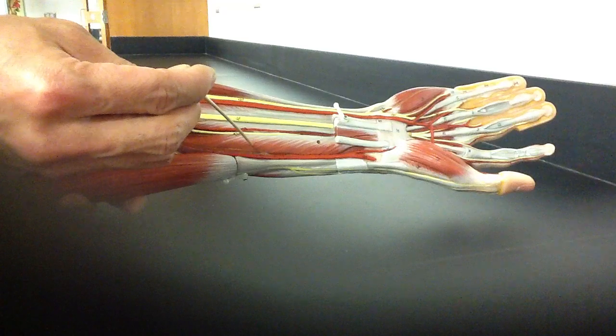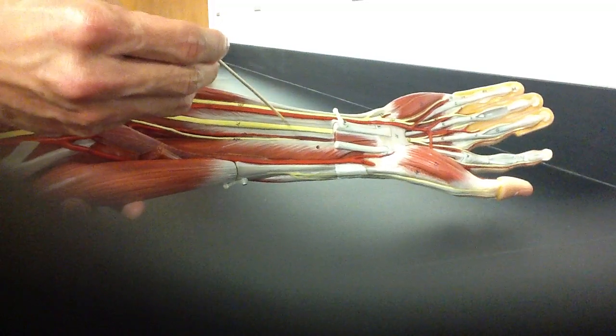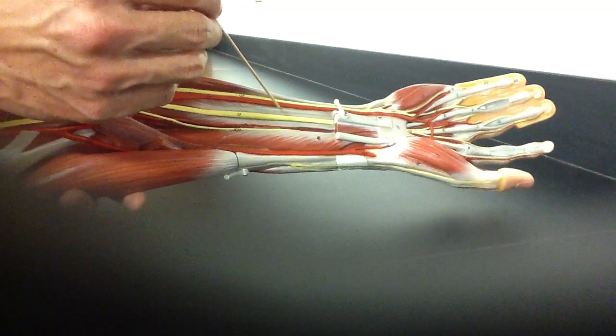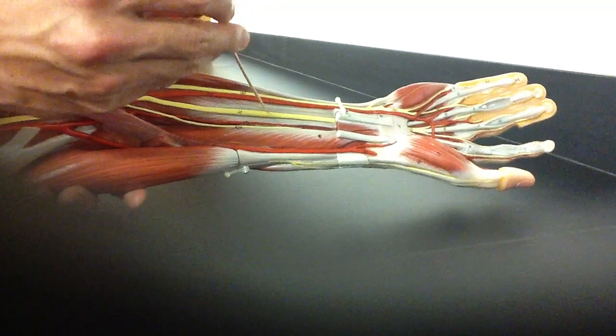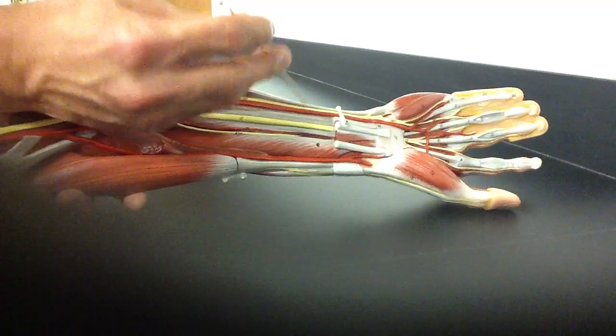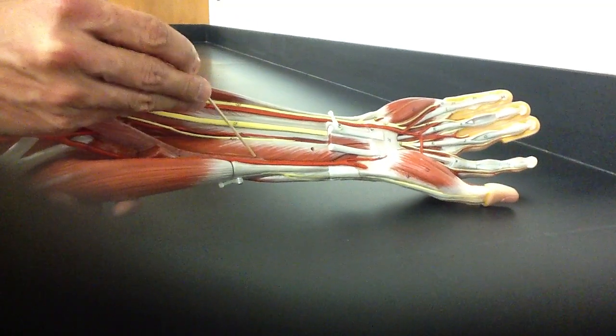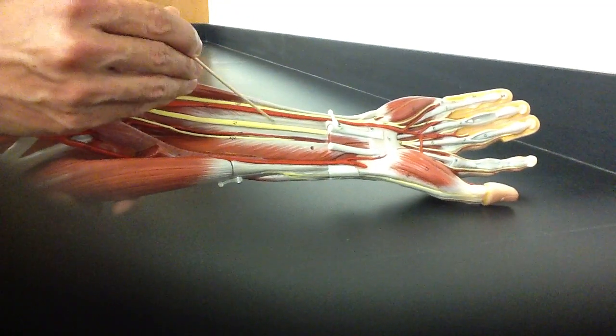But this is flexor pollicis longus, and then right next to it is one that has multiple tendons. This is where we found our flexor digitorum again, but now we have to change the name to profundus, as in profound, deep. Profound thoughts are deep. So we have the flexor digitorum profundus. So flexor pollicis longus, flexor digitorum profundus.